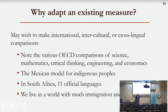Some people are adapting measures because of the OECD — the Organization for Economic Cooperation and Development — which has been doing comparisons of science, mathematics, critical thinking, engineering, and economics across countries. Those are known as PISA and TIMSS. I worked on the critical thinking component, and I'll give some examples later that will make very clear how difficult some of these issues are. We also live in a world with increasing immigration and diversity, which makes for real issues in testing.